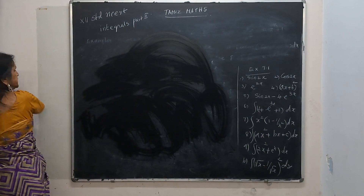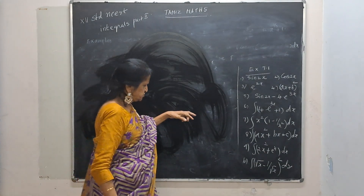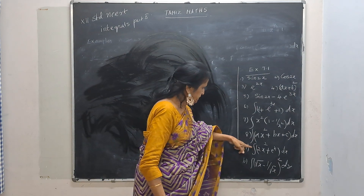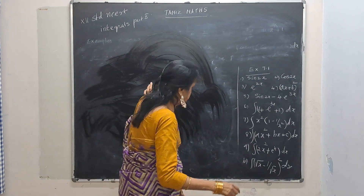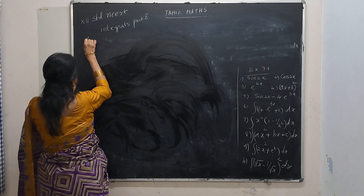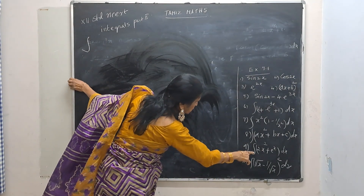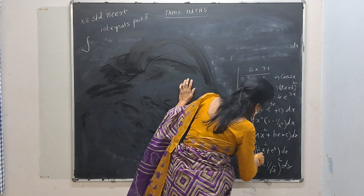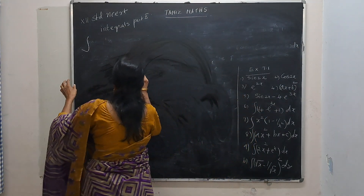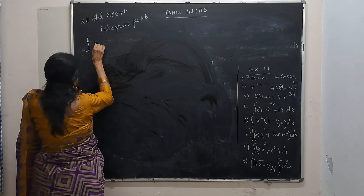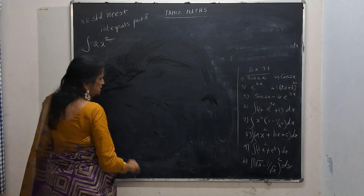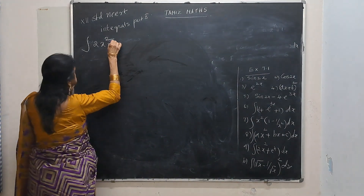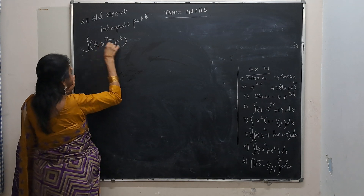Our next one: integrate 2x squared plus e to the power x dx. Split it. By now you would have gained speed. 2 is outside: 2 times integral of x squared dx plus integral of e to the power x dx.